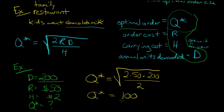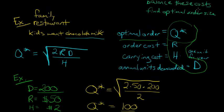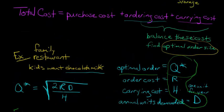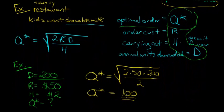So what does that mean? That means that our optimal order size that will balance the ordering cost and the cost of carrying our inventory, that will balance these things. The perfect fit is to make an order of 100 chocolate milks.